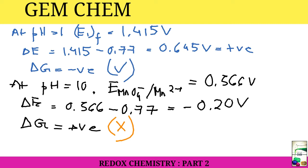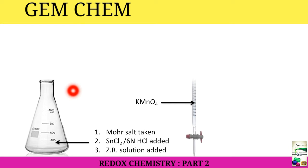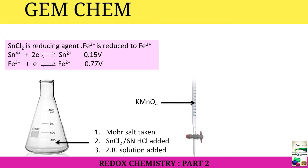Now we will see how we estimate the Fe²⁺ ions present in the Mohr salt using the KMnO4 in our practical cases, that is in titration. Before starting, you have to know a few things. First, in the conical flask we generally take Mohr salt solution, then a reducing agent that is SnCl2, and 6 normal HCl is being added, and then ZR solution is added. In the burette we use KMnO4 solution. What is the function of SnCl2 and HCl, and why is ZR solution added?